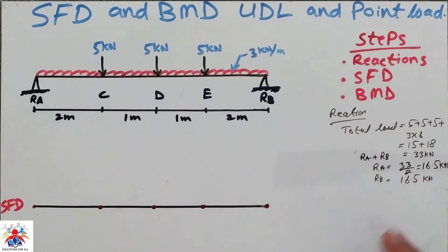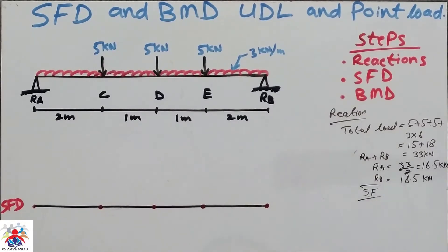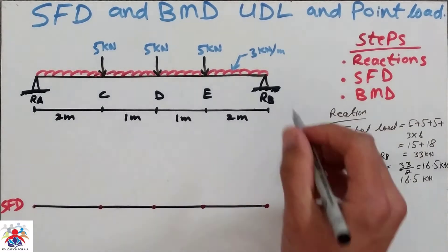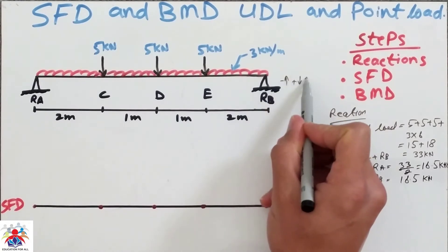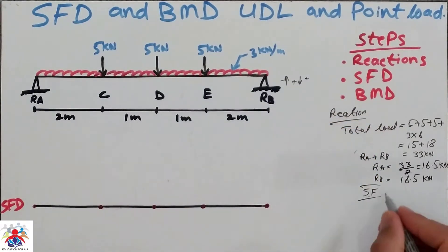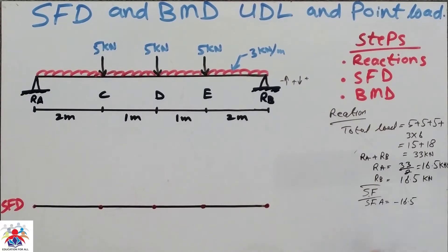Now we have to calculate shear force. I like to calculate shear force explicitly because this is quite a difficult beam. In shear force calculation, loads going upwards are negative and the reaction going upward is also negative — so shear force at A equals minus 16.5 kilonewton.